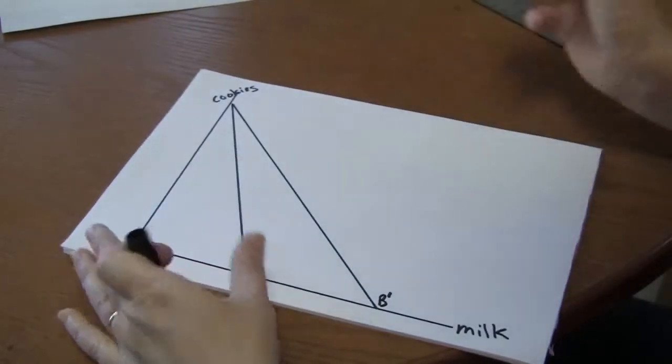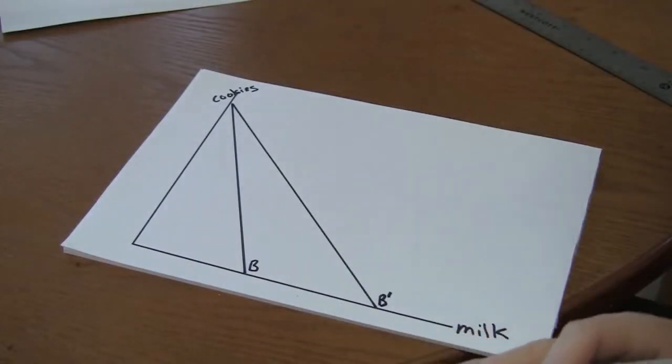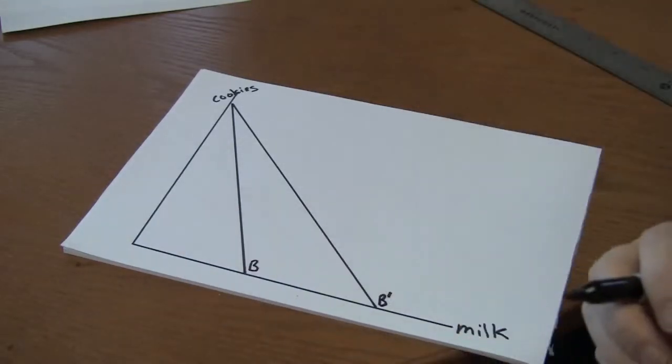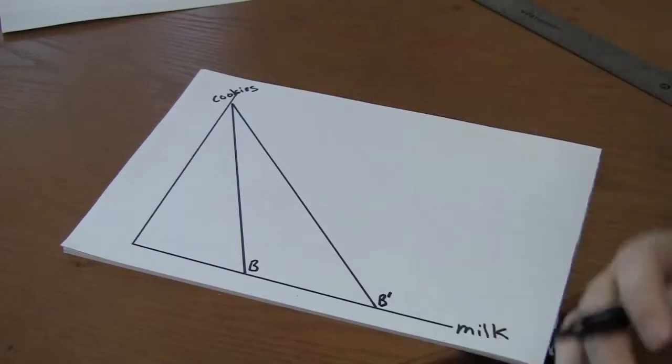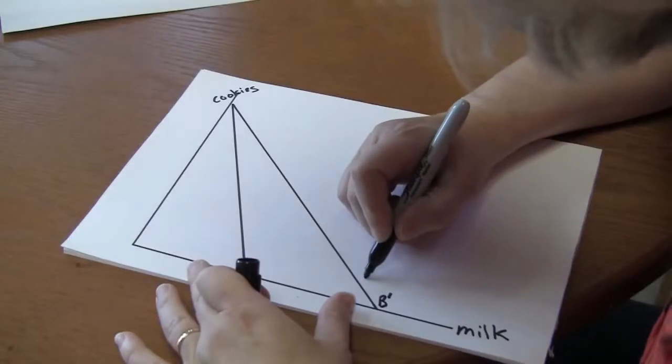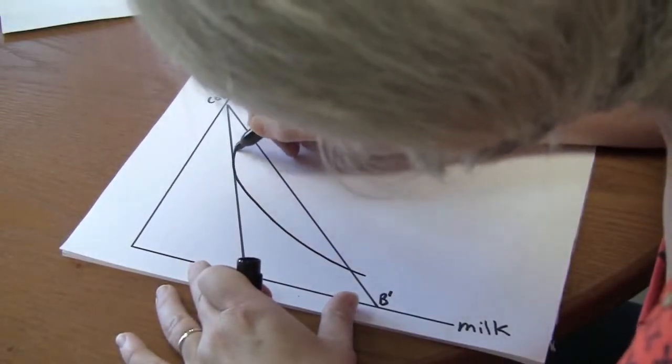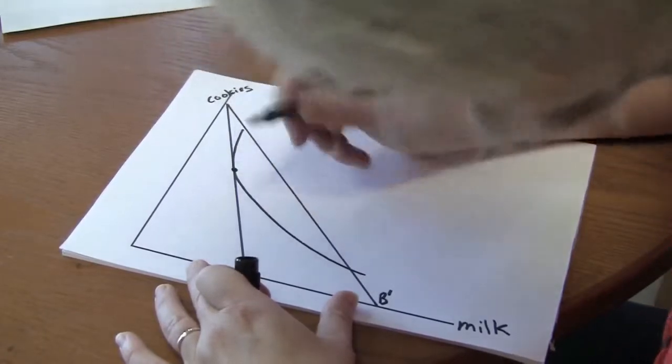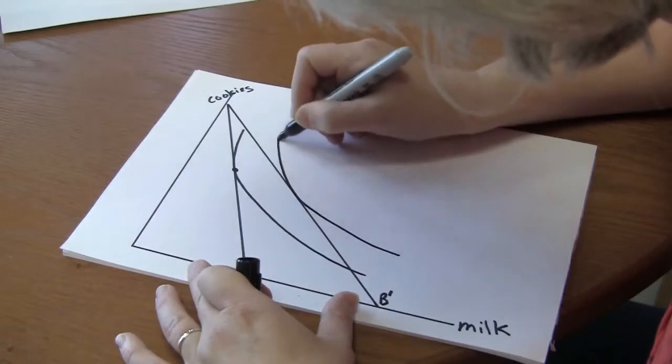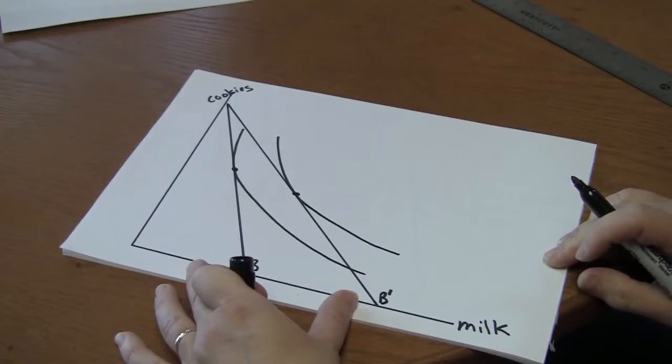Now next thing to do is to show the consumer's optimal choice before and after the price decrease. The optimal choice is where the indifference curve is just tangent to the budget constraint. Here's the consumer's original indifference curve. Here's the indifference curve after the change in prices.